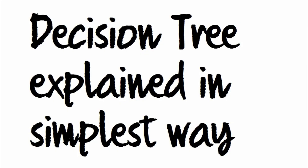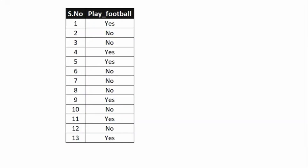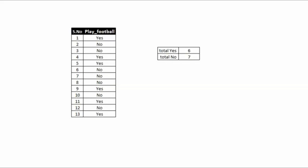So Ara is a football player. We have 14 days of historical data on whether he played football or not. The problem statement is we have to predict whether he is going to play football on the 14th day. Since we have only this data available, out of 13 days he has played football 6 days.